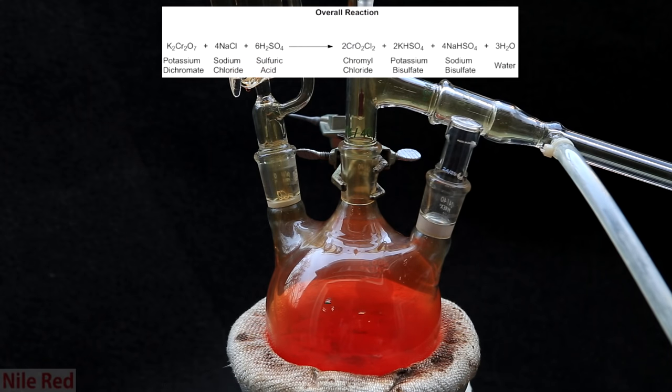Here's the overall reaction that's occurring, and we're producing sodium bisulfate, potassium bisulfate, and water as side products. This overall balanced reaction equation is obtained by adding each of the smaller reaction equations together. A little bit of tinkering must be done, and they can't just be simply added together, but if you're interested on learning how to add chemical equations together, I've included a link in the description that talks about it.